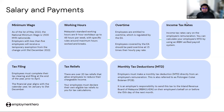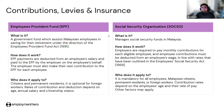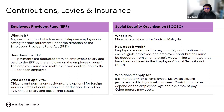Next, let's look at statutory contributions — the key considerations when doing payroll in Malaysia. We have three main statutory contributions and one levy. First is EPF, which is a government fund that assists Malaysian employees in saving for retirement. It is governed by the Employee Provident Act and is mandatory for citizens and permanent residents, optional for foreign workers. The rate of contribution depends on age, annual salary, and citizenship status.